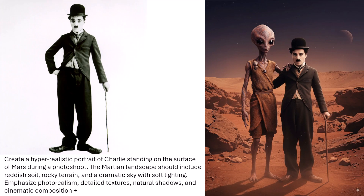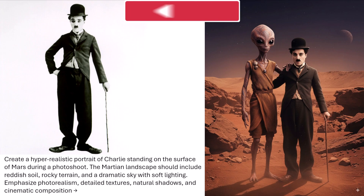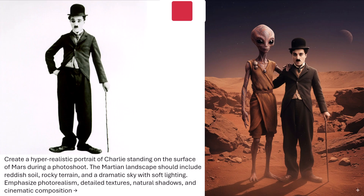Next up is a jaw-dropper: Charlie standing on Mars. The AI captures textures perfectly — red soil, dramatic skies, rocky terrain. If NASA ever needs quick promo shots, this tool is faster than Adobe Photoshop. The magic lies in the shadows and lighting — Charlie actually looks like he is under Martian sunlight, not just pasted in. If I showed this to someone without context, they'd believe Charlie really went to another planet.